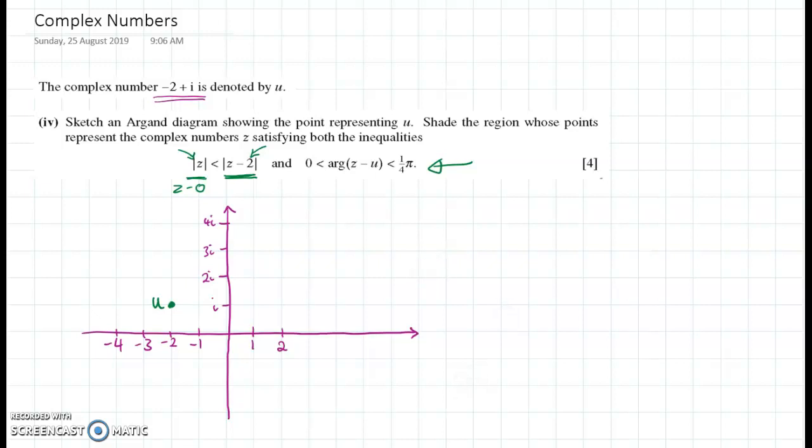So of course, that means a straight line through one. Now, since our inequality is strictly less than and not equal to, I'm going to do that as a dotted line. So we can't be on the one. We have to be everything to the left hand side of one.